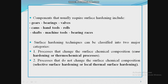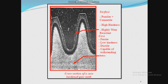Surface hardening techniques can be classified into two major categories: thermochemical processes and surface or local thermal surface hardening. This is the cross-section of a case-hardened gear tooth. The outer surface contains pearlite and cementite, with characteristics of high hardness and high wear resistance. The inner core contains ferrite, with low hardness but is ductile and capable of withstanding high stress.